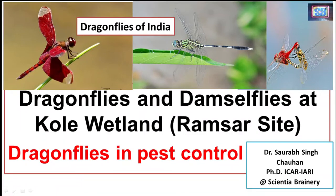Hello, Namaste. I am Dr. Saurabh and welcome to Scienshia Braineri. We know that insect global diversity is threatened due to habitat loss, pollution, pathogens, invasive species, and climate change. All these factors are responsible for the declining of insect global diversity. We know that the insects constitute the world's most abundant group of animals and they provide critical services within the ecosystems.